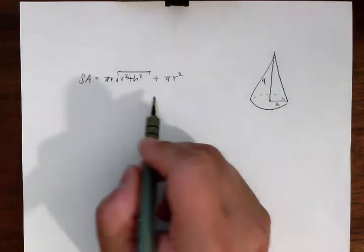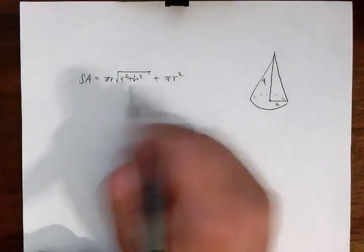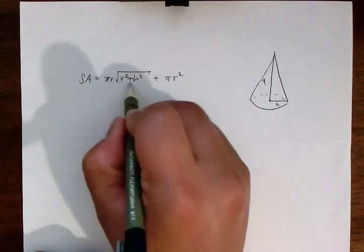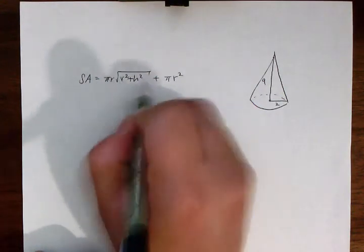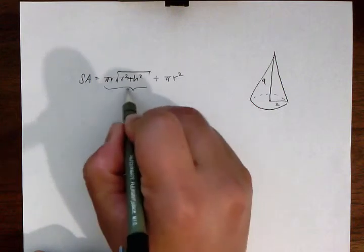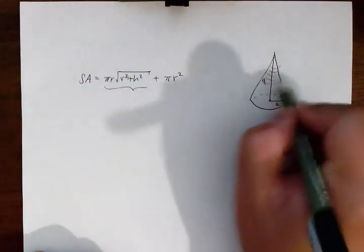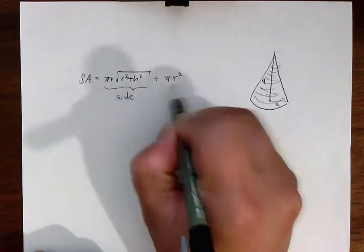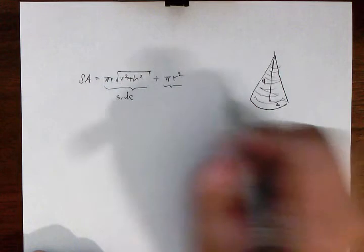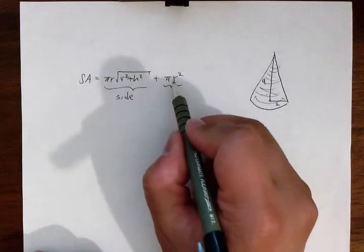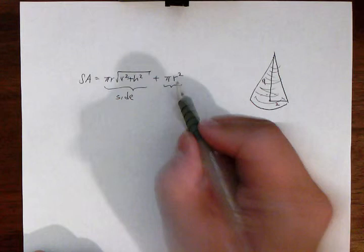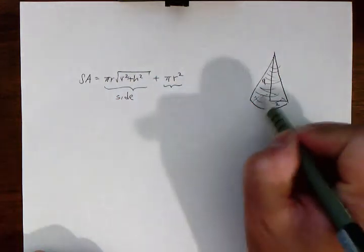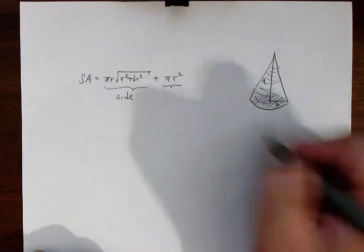Now just real quick, there's two terms to this surface area. This first term, pi r square root of r squared plus h squared, corresponds to the area of the side of the cone. The second term, pi r squared, is the area formula for a circle, and corresponds to the base of this cone.